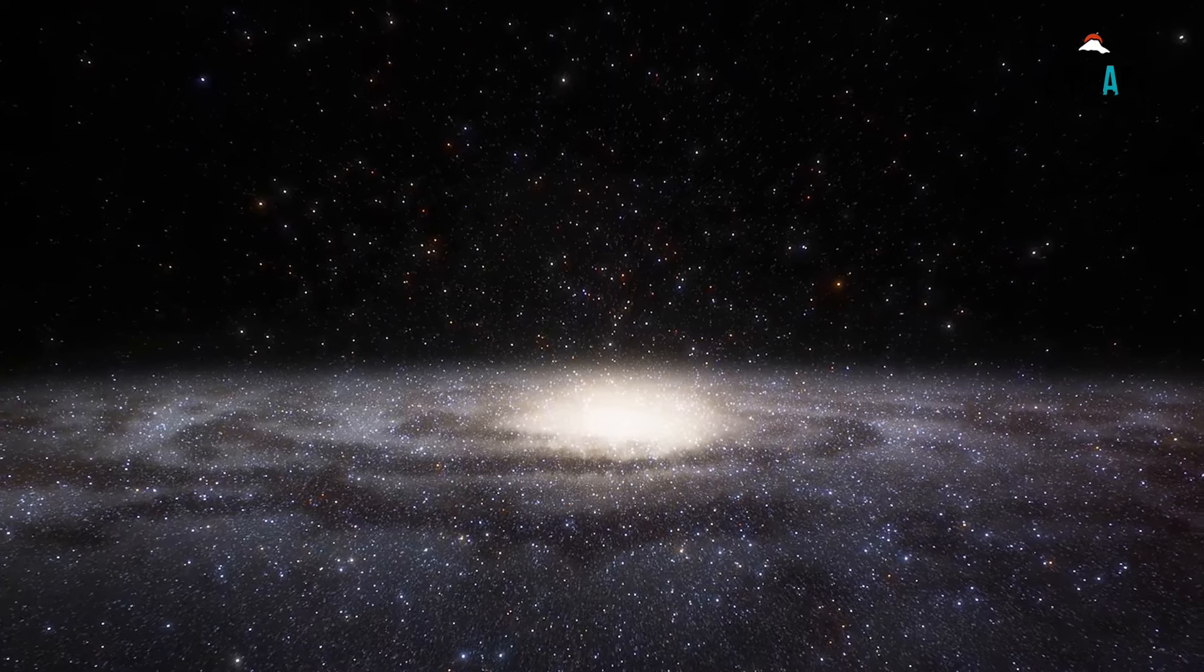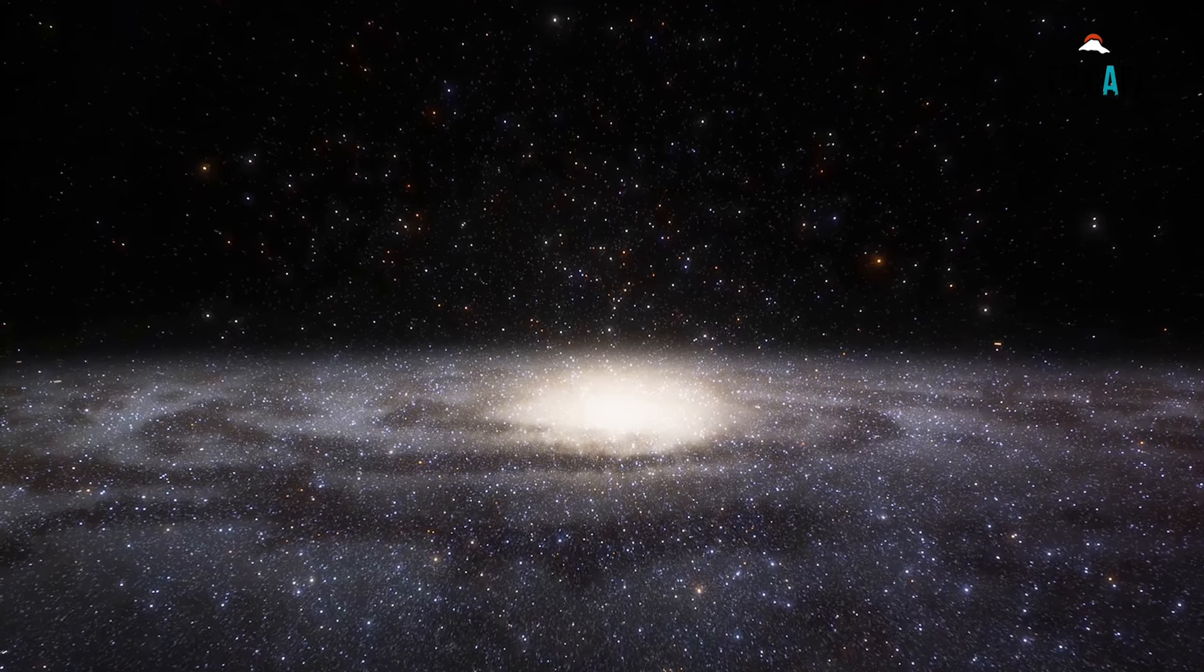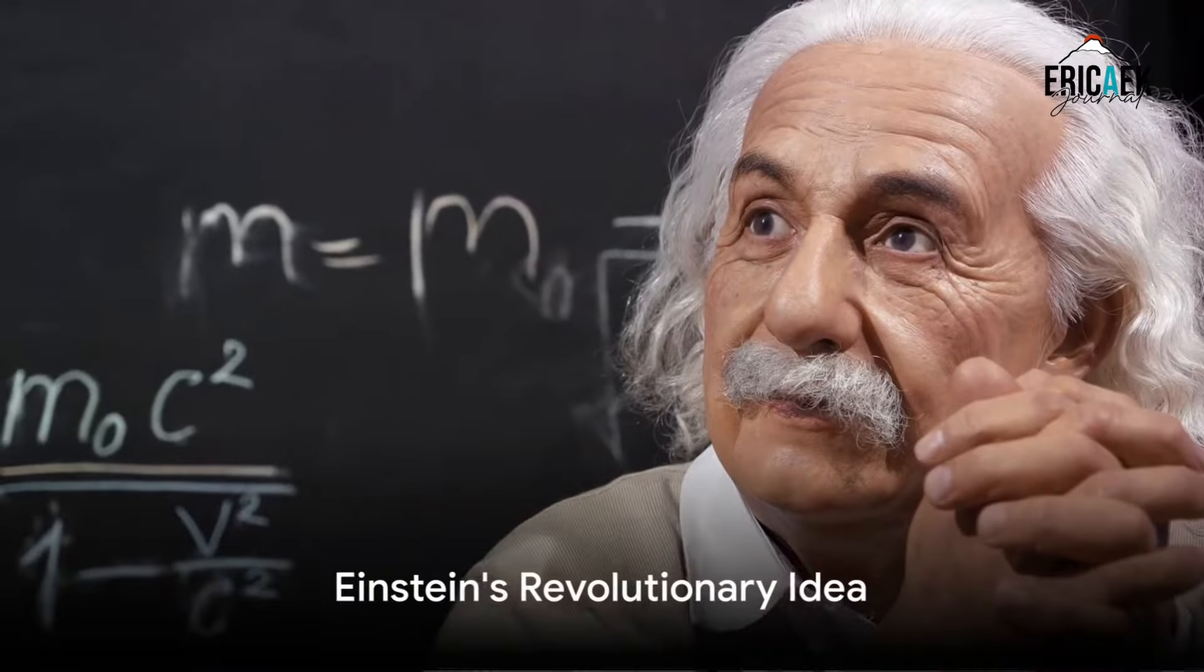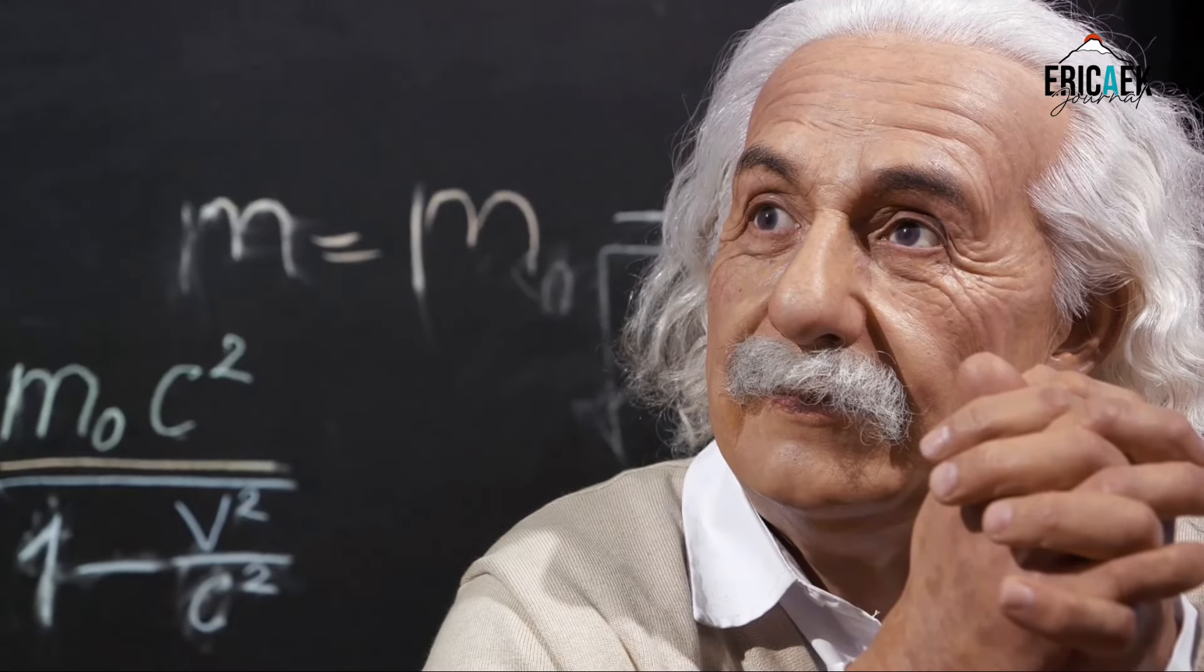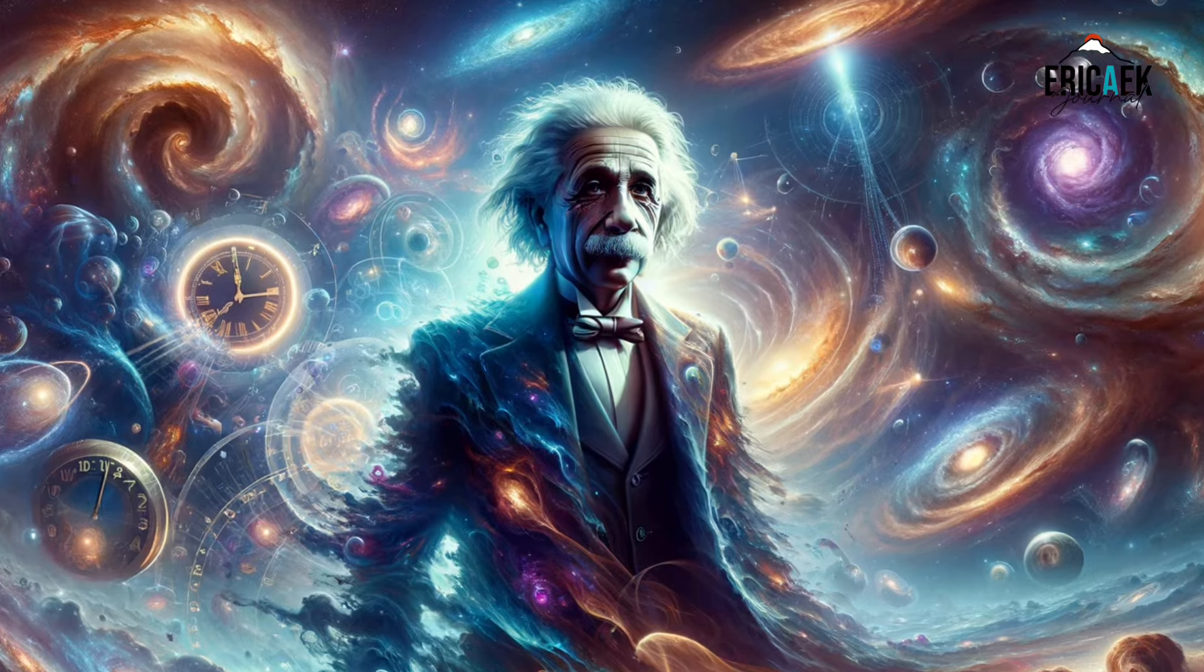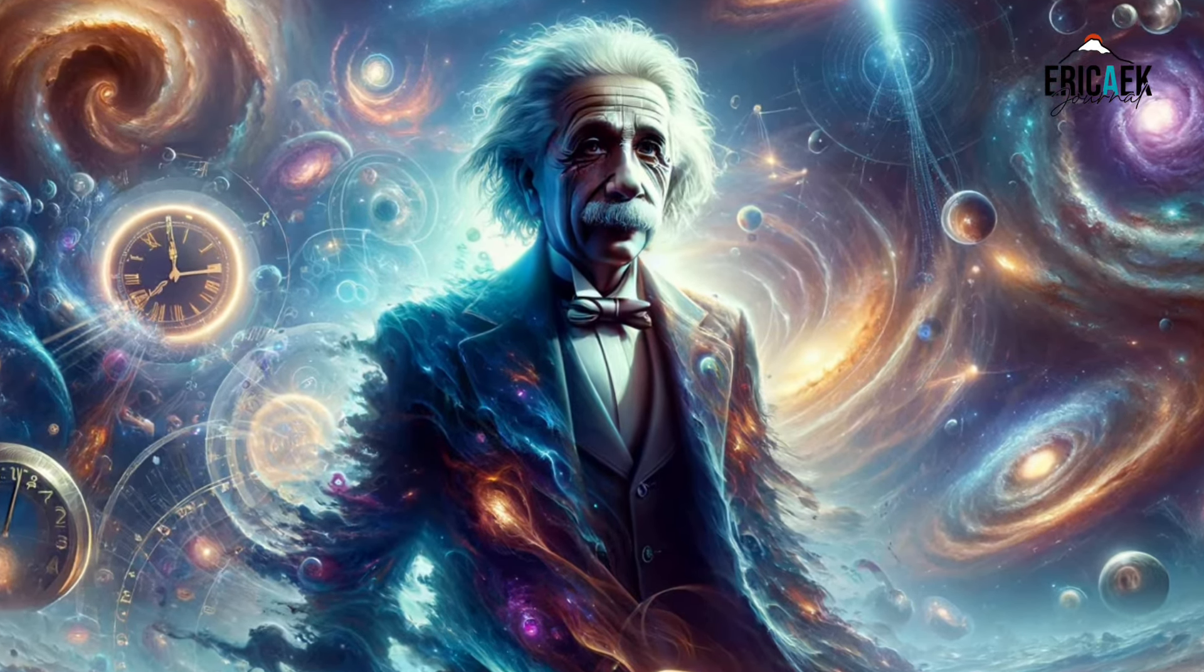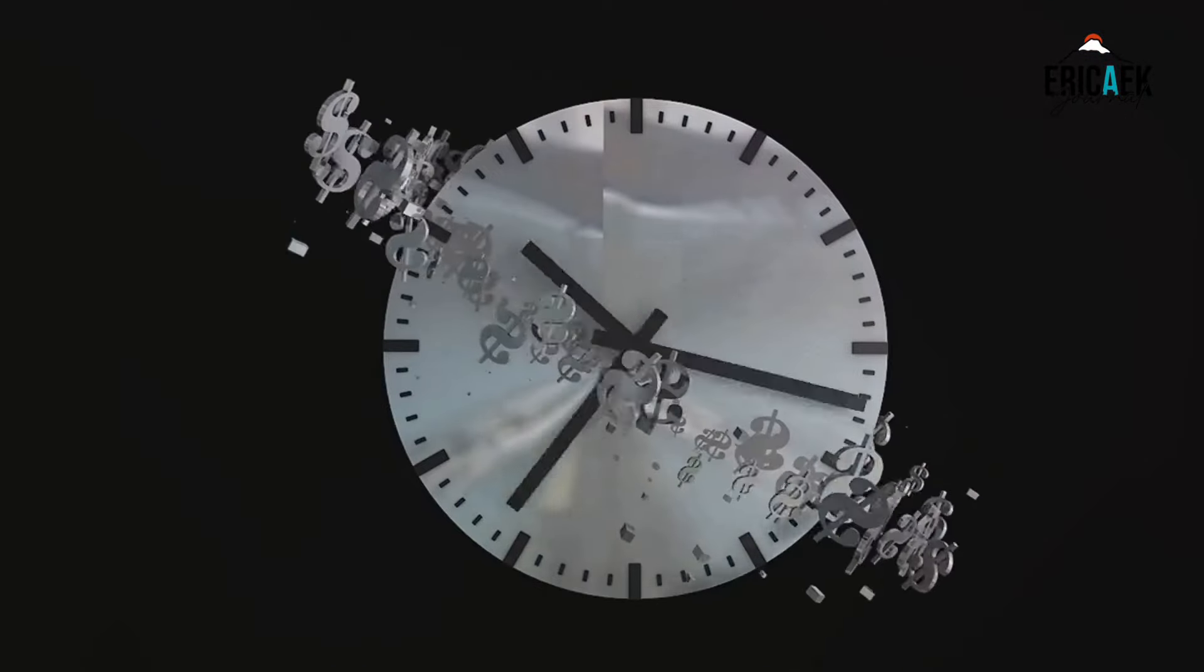So the heavier the object, the more it bends space-time. But what happens when you have an object with an immense amount of mass? Enter Albert Einstein, the man who dared to imagine a universe where space and time are intertwined. Einstein, a patent clerk turned physicist, proposed a radical idea that would forever alter our understanding of the cosmos.